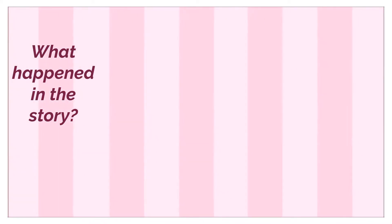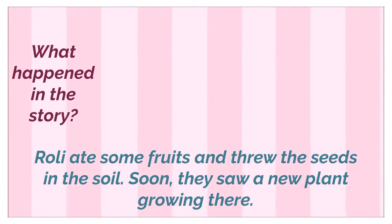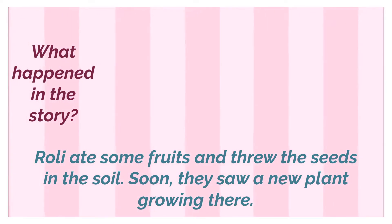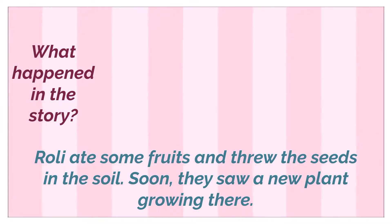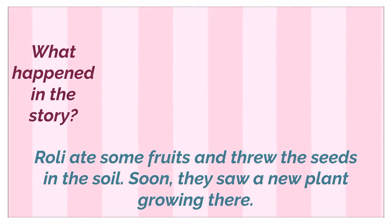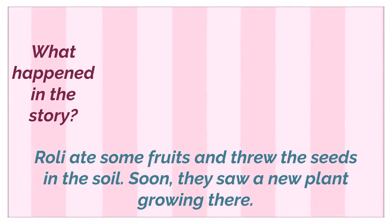What happened in the story? Rolly ate some fruits and threw the seeds in the soil. Soon, they saw a new plant growing there. It's not magical — we already know that when we throw a seed in soil, it can grow into a new plant. Rolly and her family were hunters and gatherers who went from place to place in search of food and shelter.